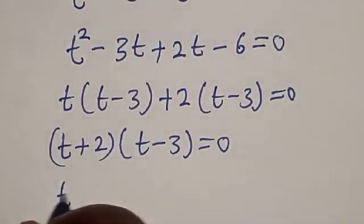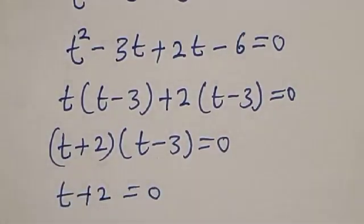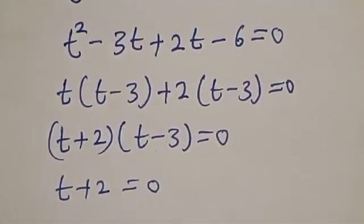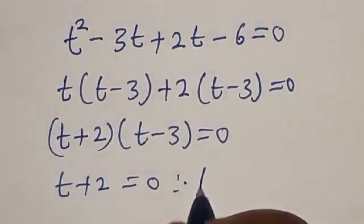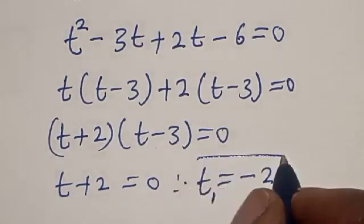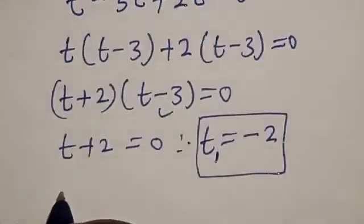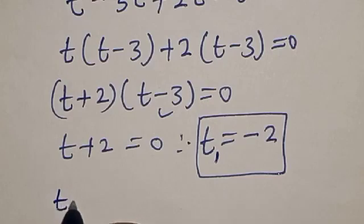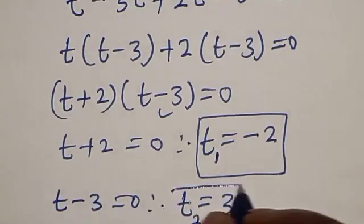Now, t plus 2 equals 0, therefore t equals minus 2. That is t1. Also from here, t minus 3 equals 0, therefore t equals 3. That is t2.